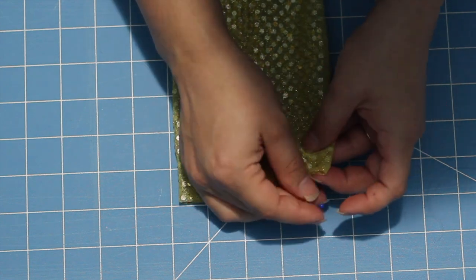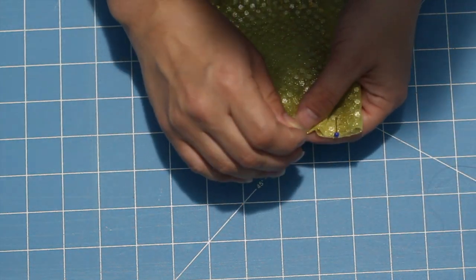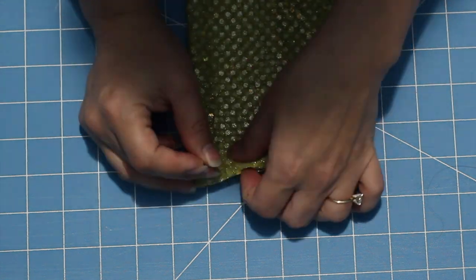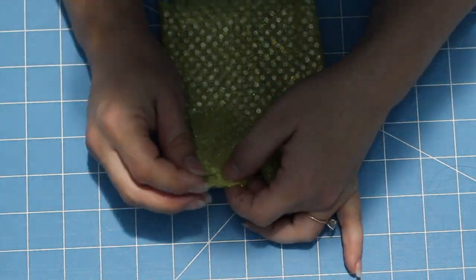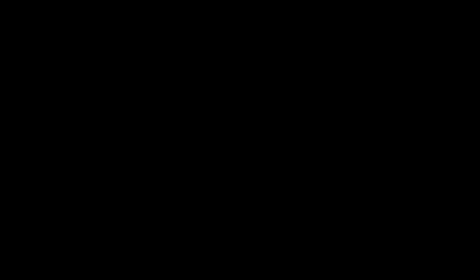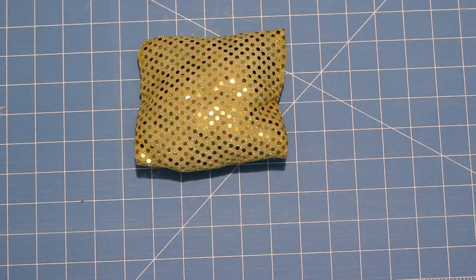So I went ahead and pinned my bow into place and then took it over to my sewing machine and stitched up the sides. Now I did not stitch up the center, so again, how you created that little pocket, you're going to want to leave that open because that is how we're going to stuff the bow and get the lights on the inside. I did not record myself stitching it or stuffing the bow, but I think you get the idea. This is the bow once it's been all stitched and stuffed.